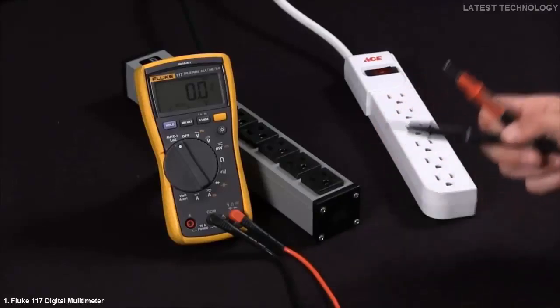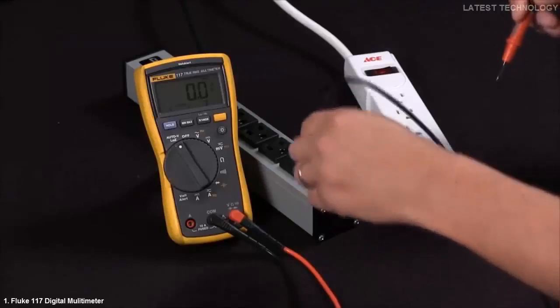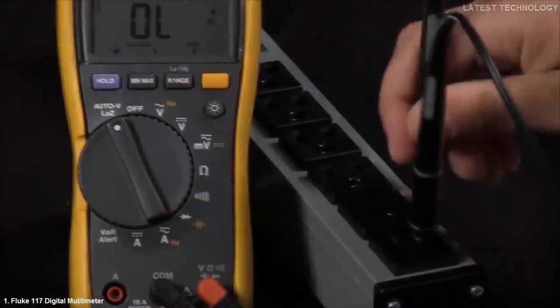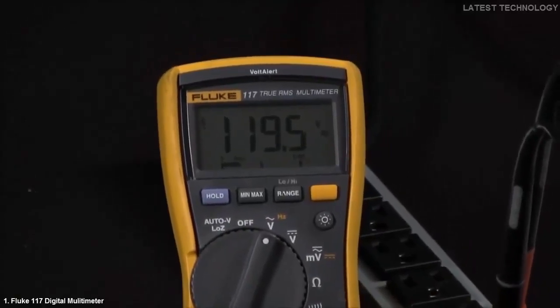In our first measurement, we're going to go with a known good source with a good ground. And we'll go ahead and turn this to voltage. And as you can see, we're getting a 120 reading.